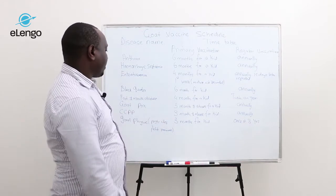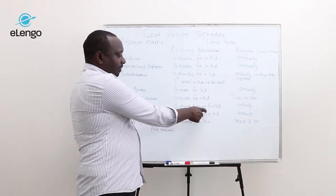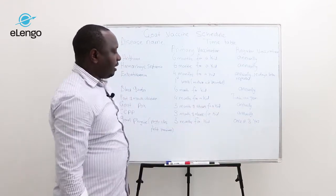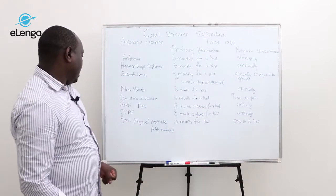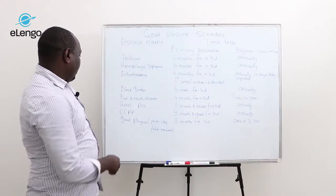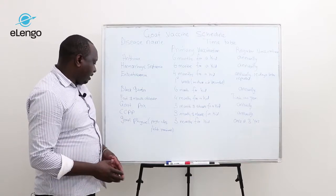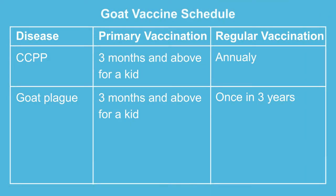Goatpox is administered to kids three months and above, and is repeated after every one year. The other one is contagious caprine pleuropneumonia, or CCPP. The vaccine is administered to kids three months and above and is repeated annually.